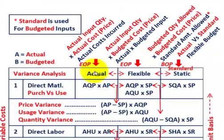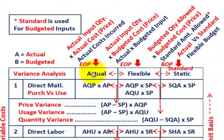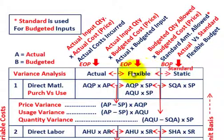Starting with variance analysis, we're really dealing with three different budgets or amounts. We start with a standard or static amount determined from our budget at the beginning of the period. At the end of the period we have actual results for the fixed overhead amounts. Based on those, we can determine the flexible amount, and the differences between actual, flexible, and static amounts are our variances.